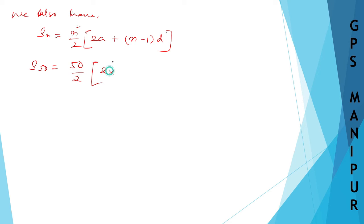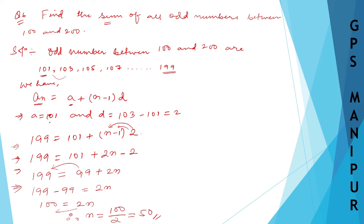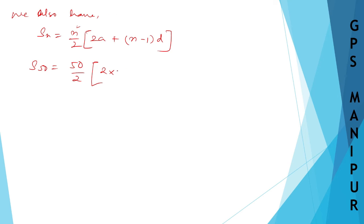Here we know the value of n. S of 50 equals n is 50 divided by 2, times 2 into A. What is A? A we got as 101, so 101 plus n minus 1, that is 50 minus 1, and D we got as 2. So 50 divided by 2 is 25.